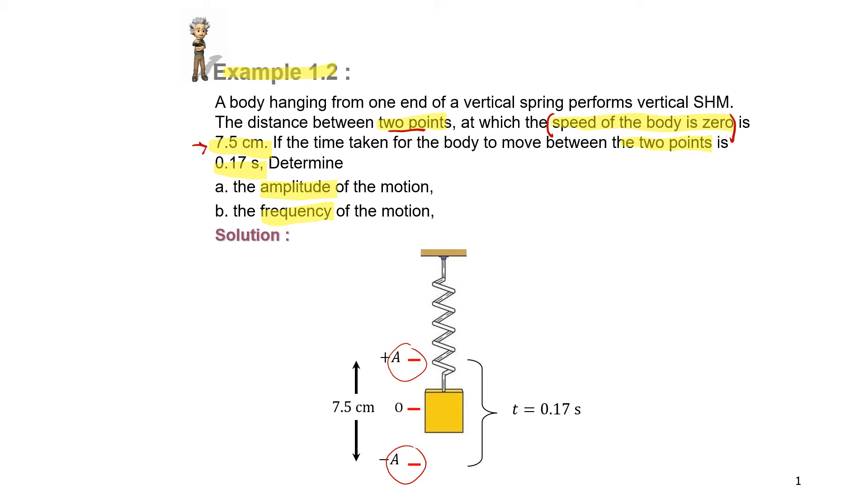The second information is the time taken to travel between these two points, which is 0.17 seconds. That is the time taken to travel from positive A to negative A. Okay, now let us answer the question.